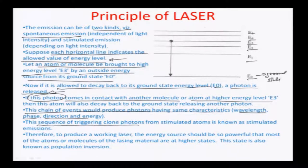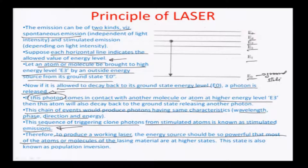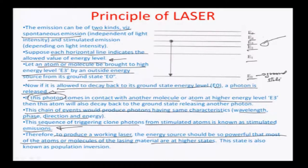The sequence of triggering clone photons from stimulated atoms is known as stimulated emission. To produce a working laser, the energy source must be powerful enough that most atoms or molecules of the lasing medium are at the higher states. All lasing systems have an ambient light source responsible for making population inversion happen — driving atoms to a higher level E₃ as indicated. This population inversion is driven by a very high power or high-energy source, and how many atoms achieve this inverted state is the goal of the lasing medium.